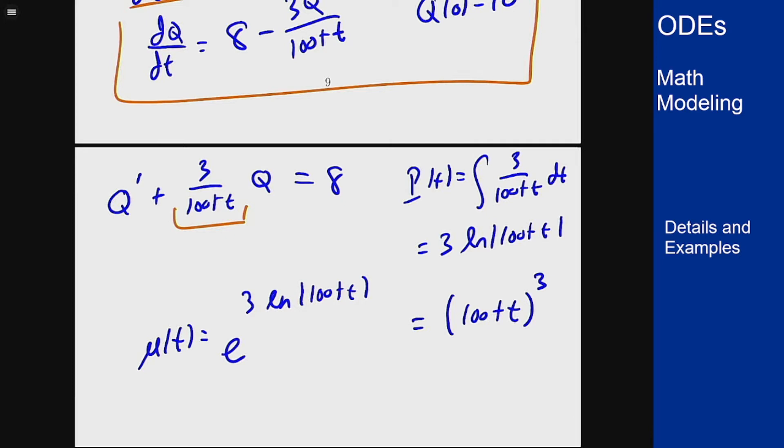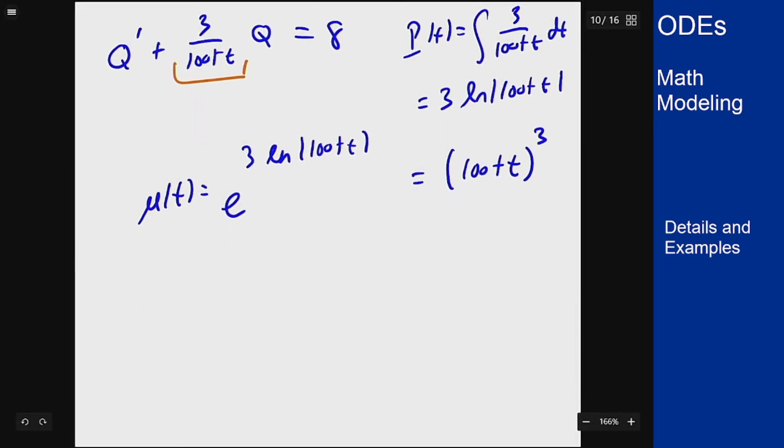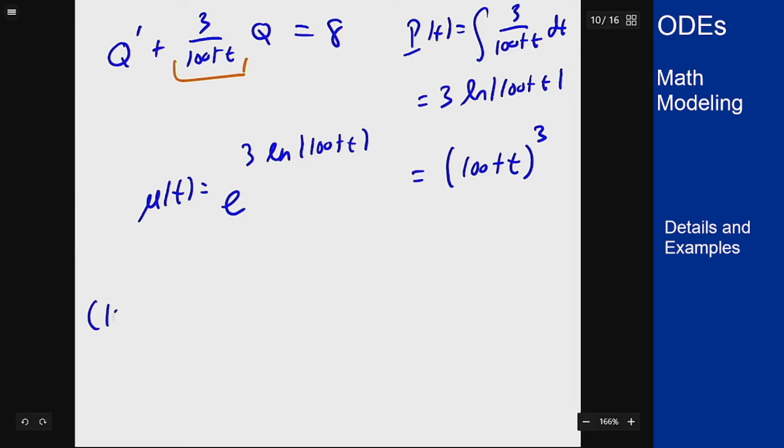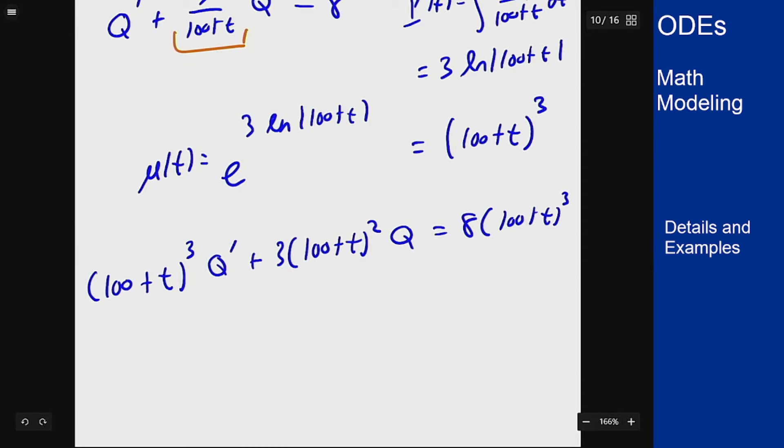We can multiply both sides by 100 plus t cubed to give me the equation: 100 plus t cubed times Q prime plus 3 times 100 plus t squared, because 1 will cancel from the denominator, times Q equals 8 times 100 plus t cubed. This here is a product rule 100 plus t cubed times Q prime.